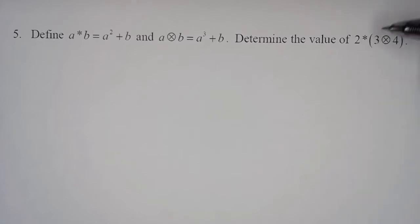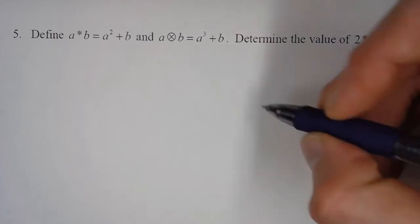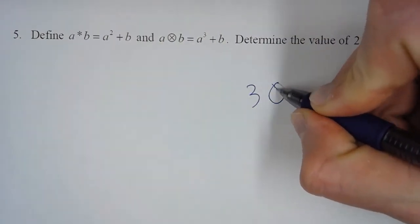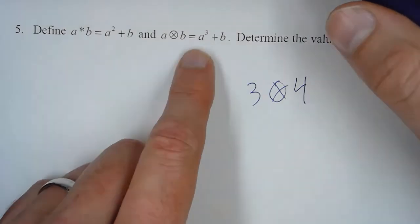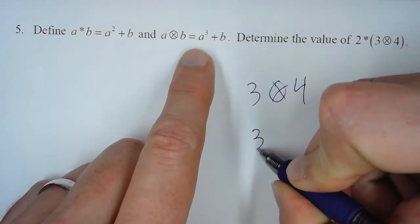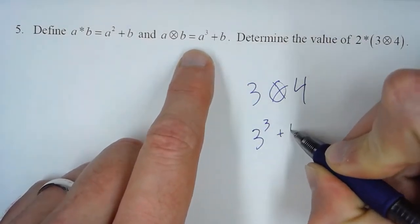So, following order of operations, we do the inside first. So we have 3, this, 4. So following the rule, we take the first number and cube it, 3 cubed, plus the second number, 4.